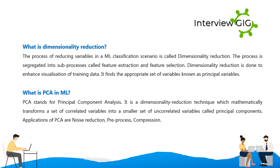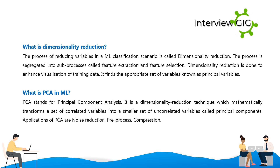What is PCA in ML? PCA stands for Principal Component Analysis. It is a dimensionality reduction technique which mathematically transforms a set of correlated variables into a smaller set of uncorrelated variables called principal components. Applications of PCA include noise reduction, pre-processing, and compression.